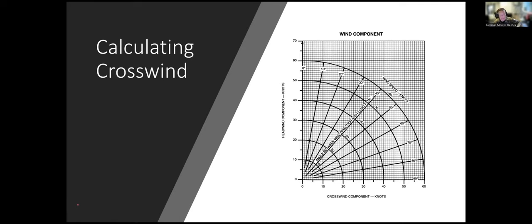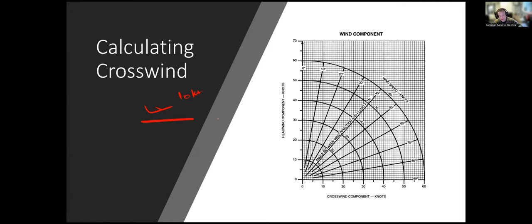Why do we care about crosswind? When landing or departing we want as much headwind as possible. Our aircraft flies through the medium of air, so a 10-knot headwind with 10 knots airspeed means zero ground speed — we can climb nearly vertically relative to the ground. That means we need less runway and can clear obstacles more easily. Tailwinds are great for cruise altitude; headwinds are great for takeoff and landing.